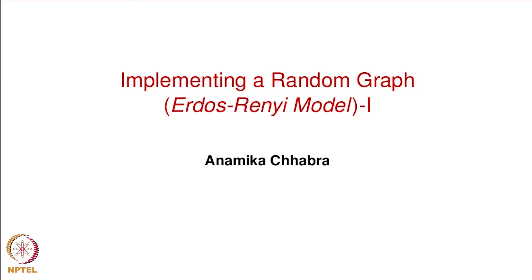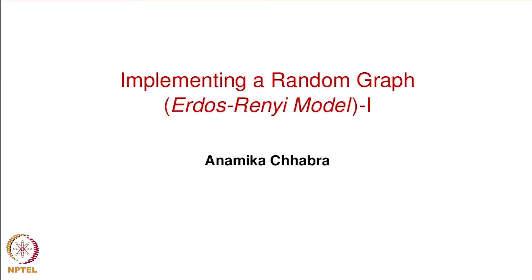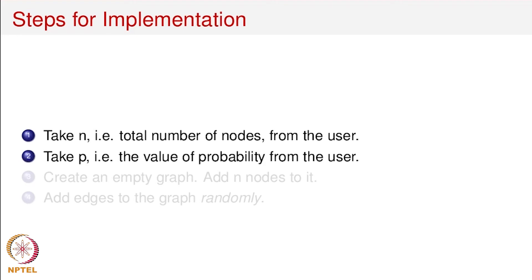Let's look at the steps we are going to follow for the implementation. There are two parameters required: n and p, where n is the total number of nodes in the network and p is the probability value. This will be input to the model and based on that the edges will be added. So we're going to take the value of n from the user and then the value of p from the user.